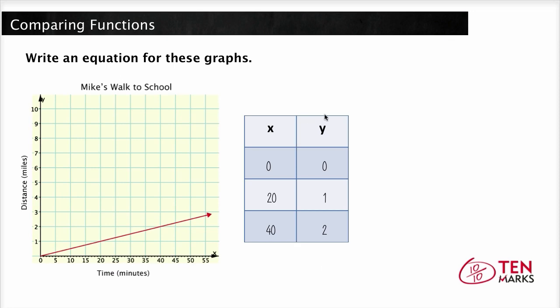Now looking at this table you can find the slope of this function. Slope is the change in y divided by the change in x. In other words the difference of the y values over the difference of the x values. So we can take any two points like 20, 1 and 40, 2 and we can plug it into this formula right here to calculate the slope. So the difference in y would be 2 minus 1 divided by the difference in x which is 40 minus 20. And this simplifies to 1 over 20.